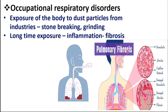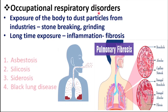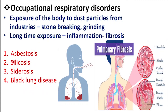Observe these two pictures comparatively. This is normal lung tissue. Here the alveoli are damaged and fibers are deposited — the tissue becomes fibrous, known as fibrosis. This is the characteristic feature of these disorders. The four main occupational respiratory disorders are Asbestosis, Silicosis, Siderosis, and Black Lung Disease.